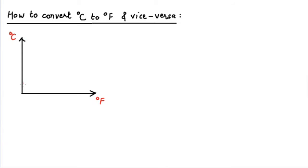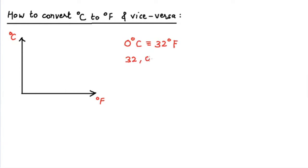We have plotted the y-axis and the x-axis: degrees Fahrenheit is on the x-axis and degrees Celsius is on the y-axis. We are aware that the freezing point of water at one atmosphere is 0 degrees Celsius, and this also corresponds to 32 degrees Fahrenheit. Therefore, the point whose x-coordinate is 32 and y-coordinate is 0 definitely belongs to the graph.